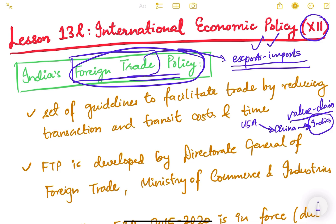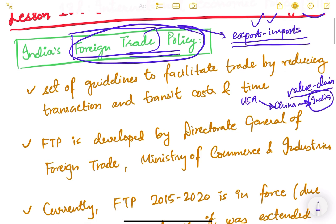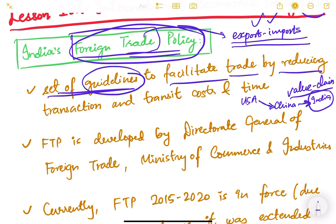The importance of foreign trade policy is significant for a country to promote its foreign trade, global competitiveness, and manufacturing industry. Foreign trade policy is essentially a set of guidelines to facilitate trade by reducing transaction costs, transit costs, and time. Every country tries to reduce hurdles to trade.